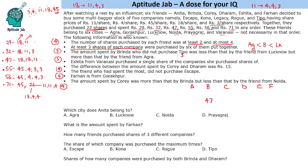Ishita is from Varanasi and purchased a single share of each company she bought. We'll look at this in detail later. The difference between the amounts spent by Kori and Dharam was 15. A difference of 15 occurs between 32 and 47, and between 56 and 71. Since 47 is already taken by Brinda, Kori and Dharam must be 56 and 71.